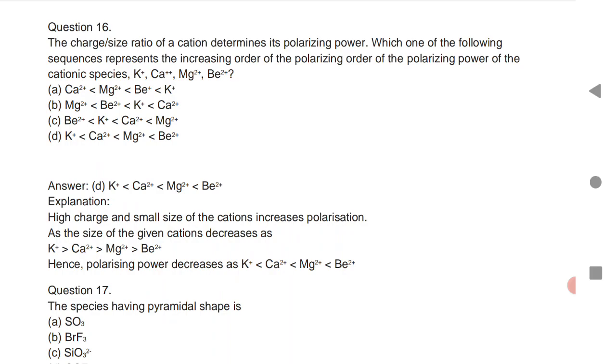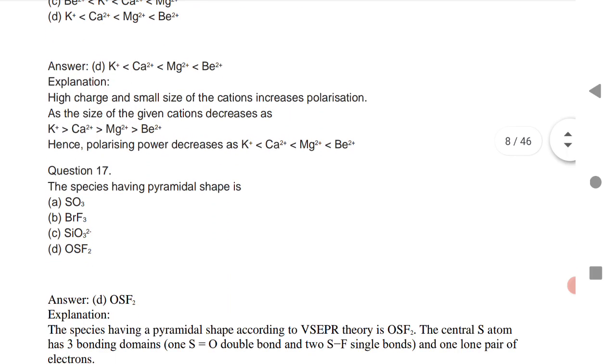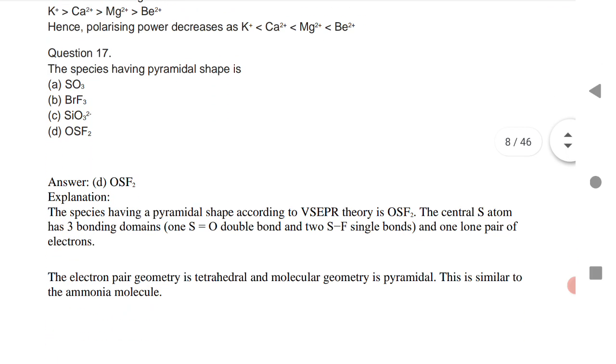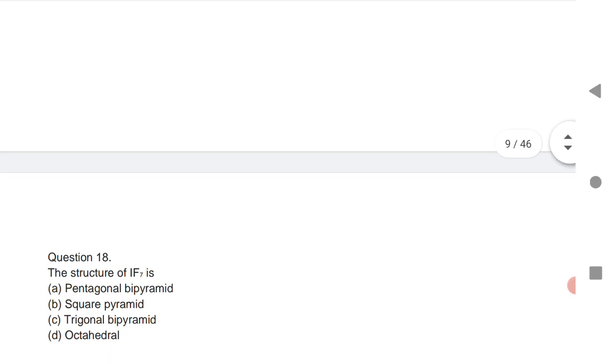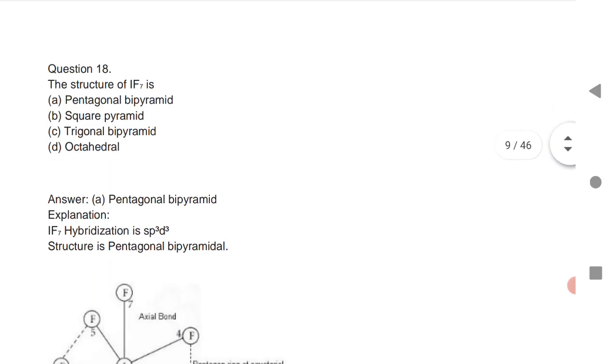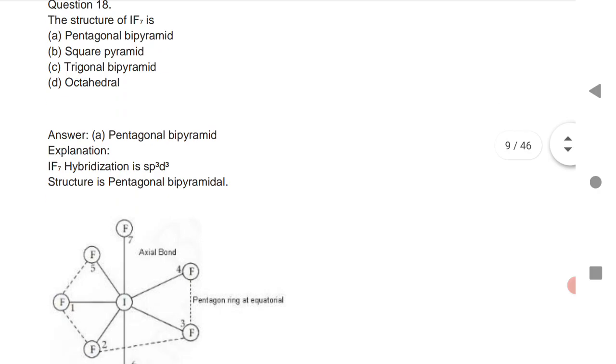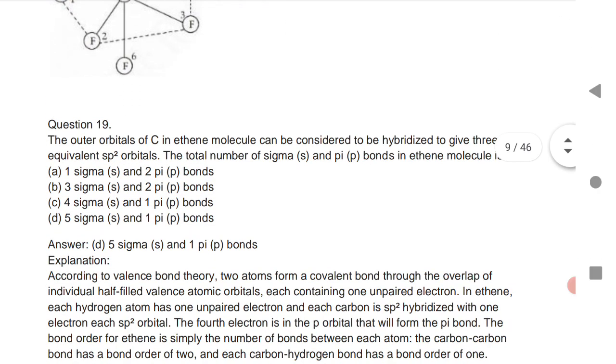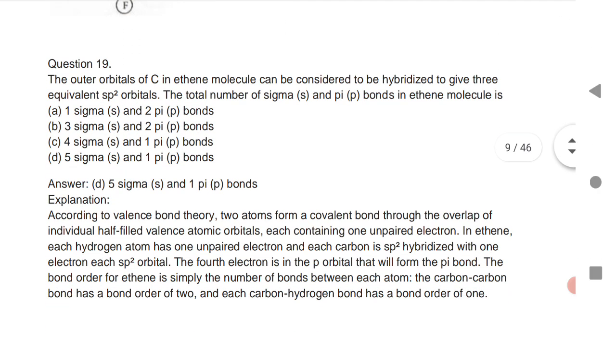The species that have pyramidal shape is OSF2. Which of the following structure of IF7 is pentagonal bipyramidal? Very important question.